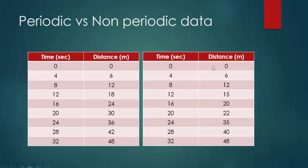The shape of the graph for periodic data and non-periodic data is different. We can tell whether a graph was made from periodic or non-periodic data just by looking at its shape. As I mentioned earlier, graphs deliver a lot of information without wasting much time — and this is an example of such information: just look at the graph and you can tell if the data is periodic or non-periodic.